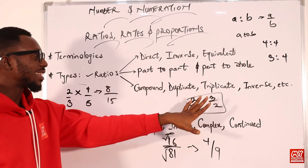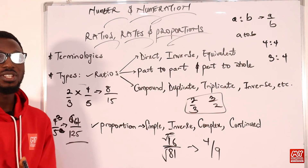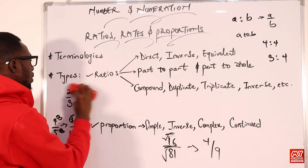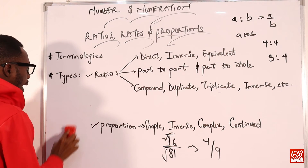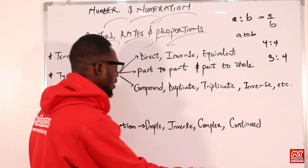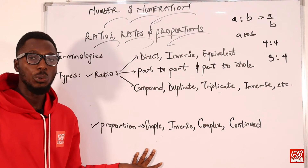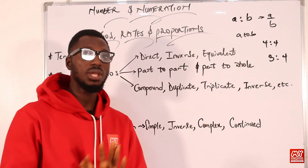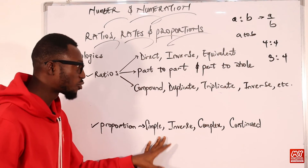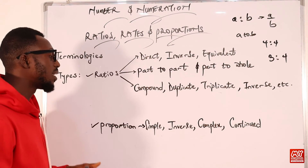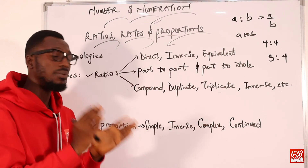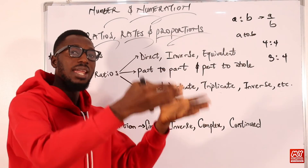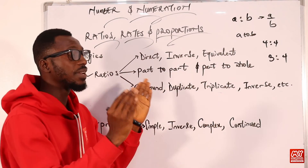Those are the types of ratios covered in this video lesson. Let's move on to proportions. The types include: simple or direct proportion, inverse proportion, complex, and continued. Simple or direct proportion means as a particular ratio is increasing — remember proportions compare ratios — the other ratio is also increasing, so the values move in the same direction.